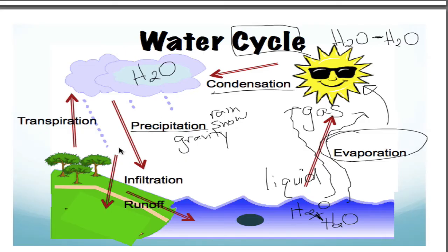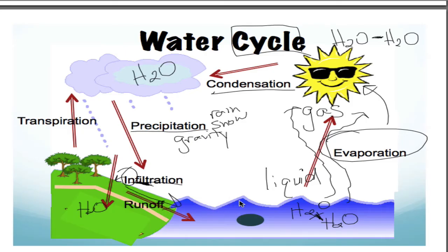Once precipitation pulls water down to the ground, two different things can happen. One arrow leads to infiltration — the key part of the word is 'in.' This water actually goes into the ground. You've probably heard of groundwater before; that's where that water comes from. Or that water falling to the ground can hit the surface and just run off into either a lake, river, or ocean — and that's called runoff. So two things can happen when precipitation hits the ground: it can either go into the ground or run off the surface.